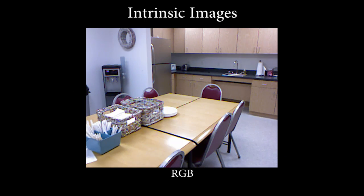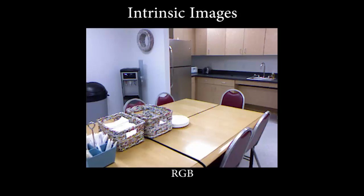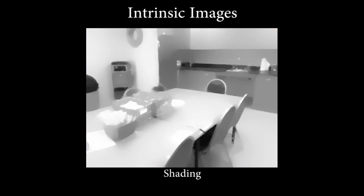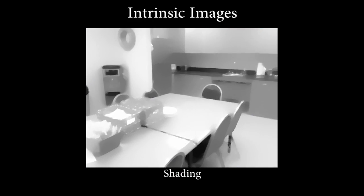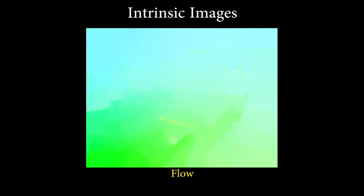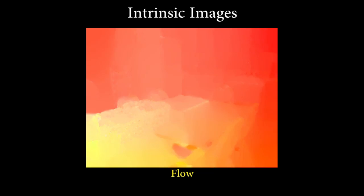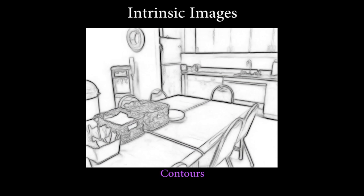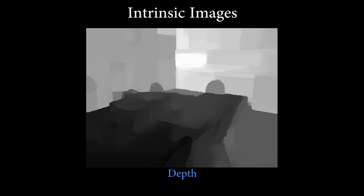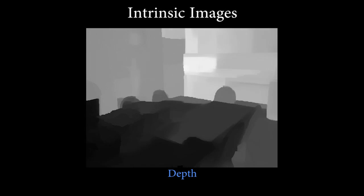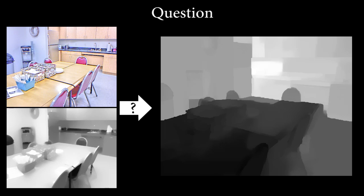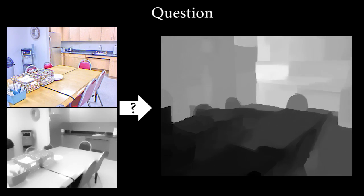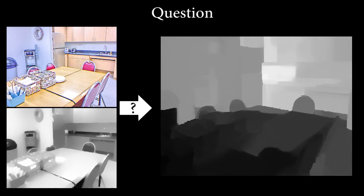It is a long-standing hypothesis that these fundamental scene properties provide a foundation for scene interpretation. While recent work has focused on estimating surface reflectance and shading, the original hypothesis of Barrow and Tenenbaum was that all these image-based representations should be estimated together, synergistically exploiting consistency between them. Here, we test the specific hypothesis that the extraction of shading and albedo improves the estimation of depth.